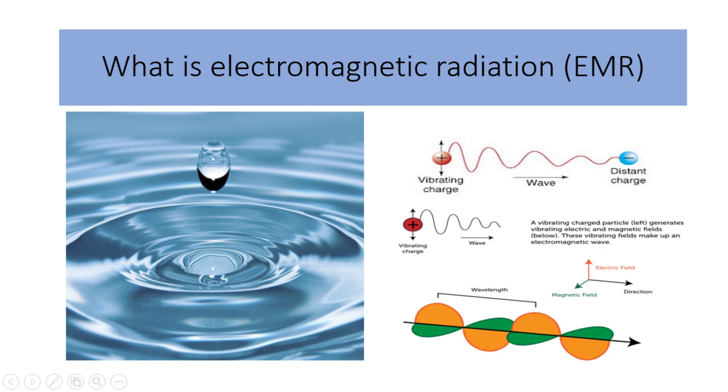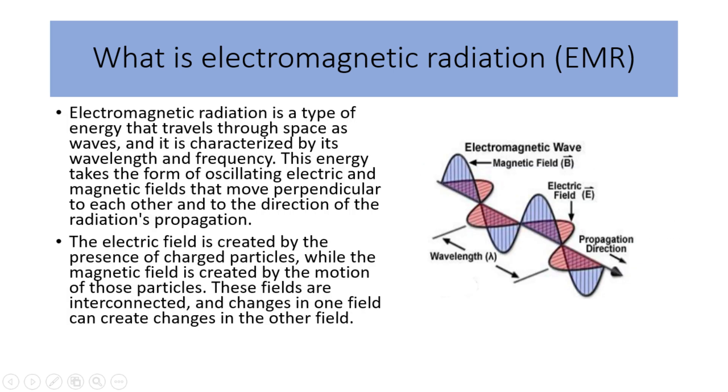At the same time, this changing electric field also generates a magnetic field. The magnetic field is like a swirling pattern of invisible lines that surround the electric field disturbance. These lines of the magnetic field interact with the electric field, creating a kind of partnership between the two. Together, the electric and magnetic fields form electromagnetic waves. These waves can travel through space, just like the ripples on the lake spread out. They carry energy and information across vast distances. Electromagnetic radiation consists of both magnetic and electric fields. These fields are like invisible forces that work together to create waves of energy that travel through space. The magnetic and electric fields are perpendicular to each other, as shown in this figure. These fields move in the direction of propagation. The presence of charged particles creates the electric field, while the motion of those particles creates the magnetic field. These fields are interconnected, and changes in one field can create changes in another.